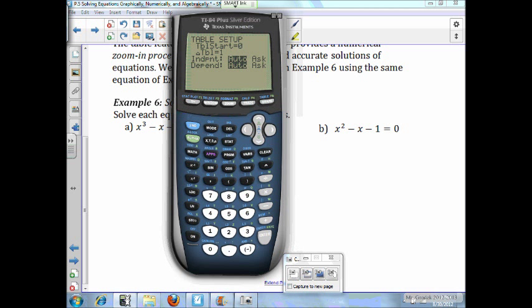Your table starts. Well, since my zero is between 1 and 2, I want my table start to be 1. Go down to the change in table and make that a 0.1. Now, second table, and you have your table. Now, you should be able to see, then, that your zero is somewhere between 1.3 and 1.4.